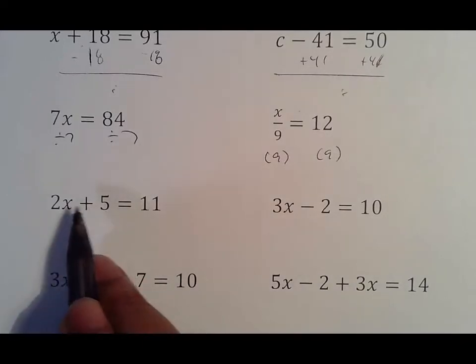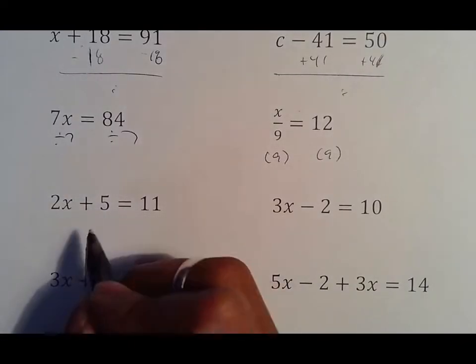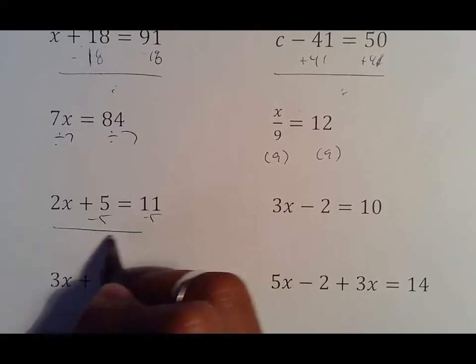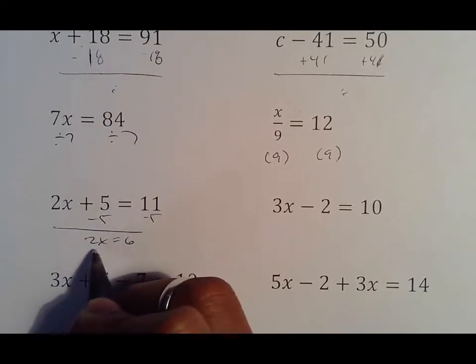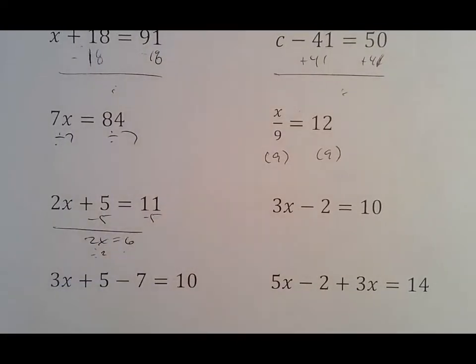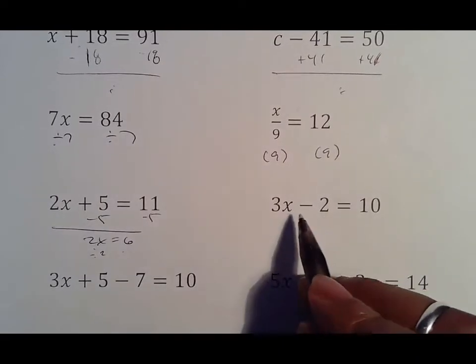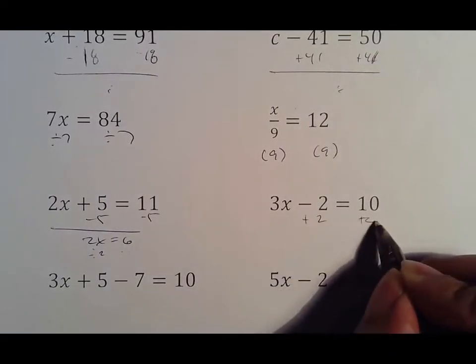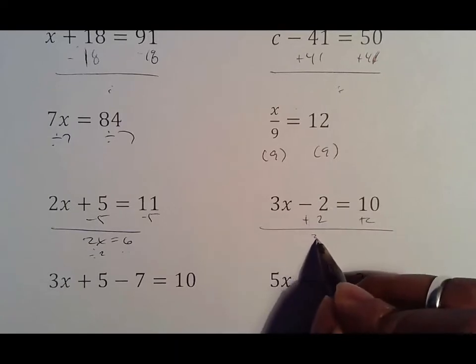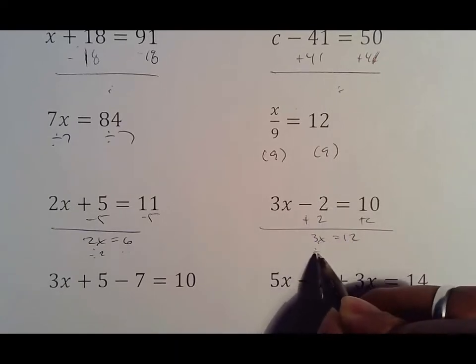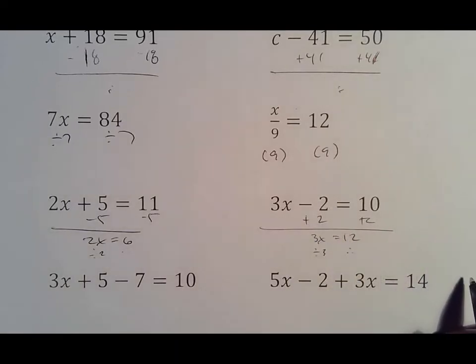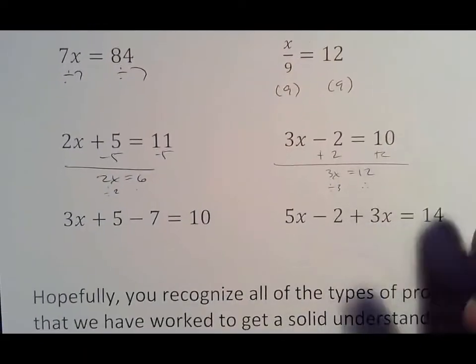I should recognize that the 5 and the 2 are with x, that the 5 goes first by subtracting it, and then we divide by 2 and move on. Same thing over here. If it was 3x minus 2, we should recognize we're going to add 2 first because that number goes first, bringing down 3x equals 12, and again dividing by 3.